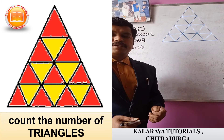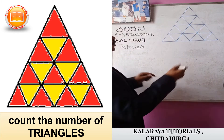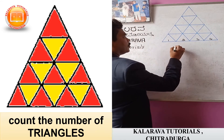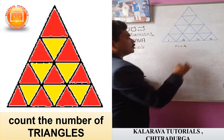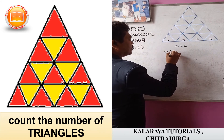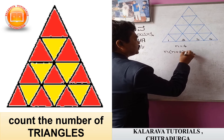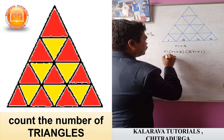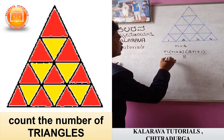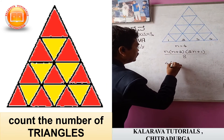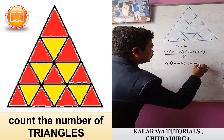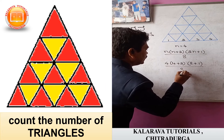Here, we have to find out the number of triangles in this diagram. We take here 1, 2, 3, 4 — there are 4 numbers, so n equals 4. There is a formula: n into (n plus 2) into (2n plus 1) divided by 8. We have to apply this formula. Here n is equal to 4, we substitute the value of n.